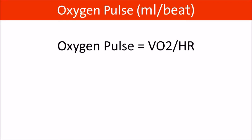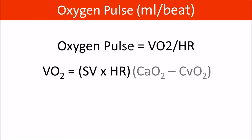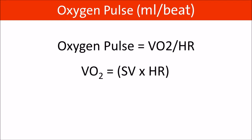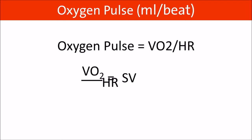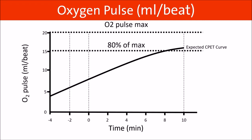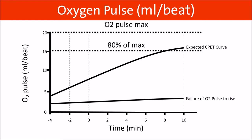Oxygen pulse is how much oxygen is used per heartbeat and is calculated by dividing the VO2 by the heart rate. We can calculate the maximum O2 pulse by taking the predicted VO2 max and dividing it by the maximum estimated heart rate. O2 pulse is a surrogate for stroke volume; therefore a low O2 pulse may indicate cardiac disease. The goal is to reach 80% of maximum predicted. Plateauing may indicate myocardial ischemia, and failure of O2 pulse to rise may indicate poor left ventricular function.